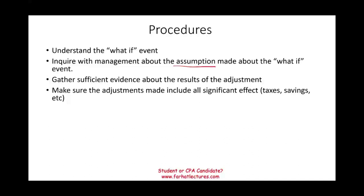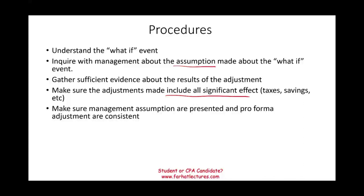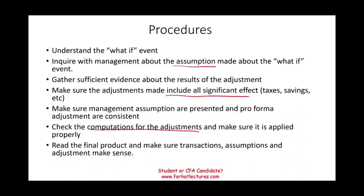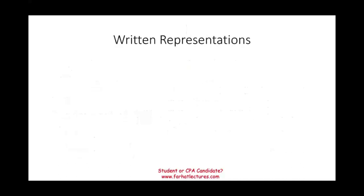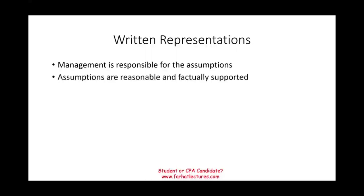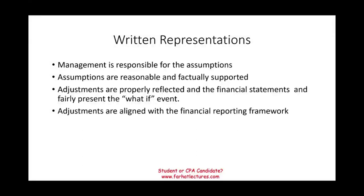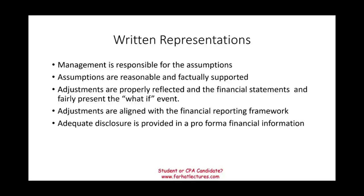Make sure the results include all significant effects — if you change revenues, you will change taxes; if you change expenses, you change taxes and other items as well. Make sure management assumptions are presented and that the pro forma adjustments are consistent with each other. Check the computation for the adjustments, make sure they are applied properly, and read the final product to confirm the transaction, assumptions, and adjustments all make sense. Written representation from management must state that assumptions are reasonable and factually supported, adjustments are properly reflected in the financial statements and fairly present the 'what if' event, and adjustments are aligned with the financial reporting framework.